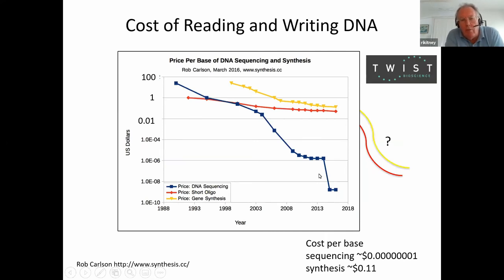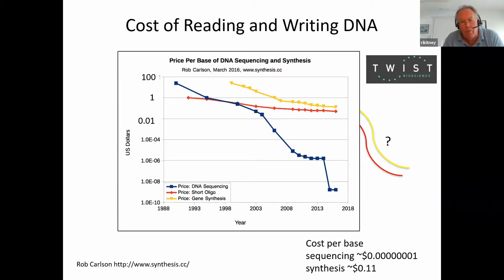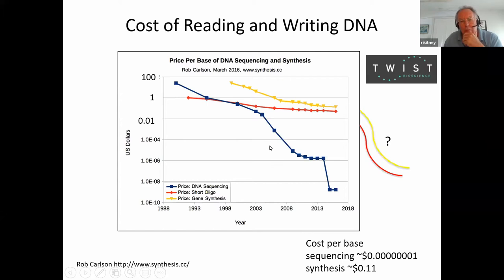This relates back to around 2003–2004, when it became possible to actually produce DNA chemically — called DNA synthesis, shown here in yellow. The sequencing of DNA, shown in blue, progressed somewhat earlier. It's the combination of the ability to read DNA and then produce it chemically which is the basis of synthetic biology. These curves are called the Carlson curves, and you can see the cost of sequencing and synthesizing DNA is rapidly coming down — not only in price, but going up in terms of capability.